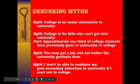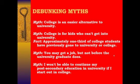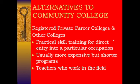Another myth: I won't be able to continue my post-secondary education at university if I start out in college. In fact, many colleges are linked with a neighboring university. Mohawk and McMaster have a relationship where students start at Mohawk and finish at McMaster — nursing is a great example. Students earn both a diploma and a degree. There are also alternatives to community college, such as private career colleges, which often get you direct entry into a specific occupation. They're usually more expensive but shorter — a hairstyling college is one example. Just know that they are available, and they are more expensive.